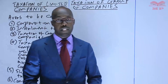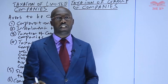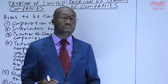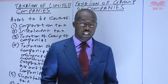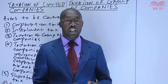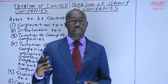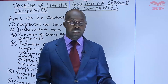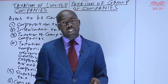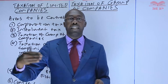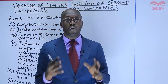When we talk of the taxation of the group of companies, what do we mean? A group of companies refers to where companies acquire shares in each other. When companies acquire shares in each other, they become related. For example, company A having acquired shares in company B, and the same company can acquire shares in company C. B can go and acquire company D, and D acquires company H. C can acquire company L. When you look at those companies, we consider them to be a group of companies.